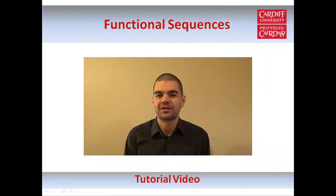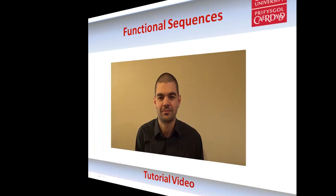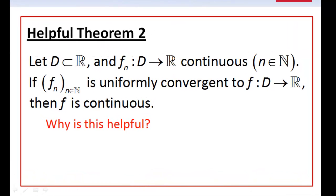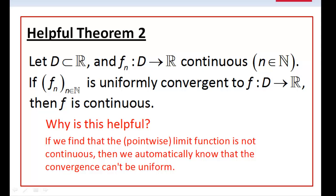The sequence was no longer uniformly convergent after we changed the domain so that the pointwise limit function was no longer continuous. The next theorem sheds light on this: if we have a uniformly convergent sequence of continuous functions, then the limit function must also be continuous. This is helpful because if a sequence is pointwise convergent to a discontinuous limit function, we automatically know the sequence cannot be uniformly convergent. This theorem can substantially reduce the work needed when checking for uniform convergence.